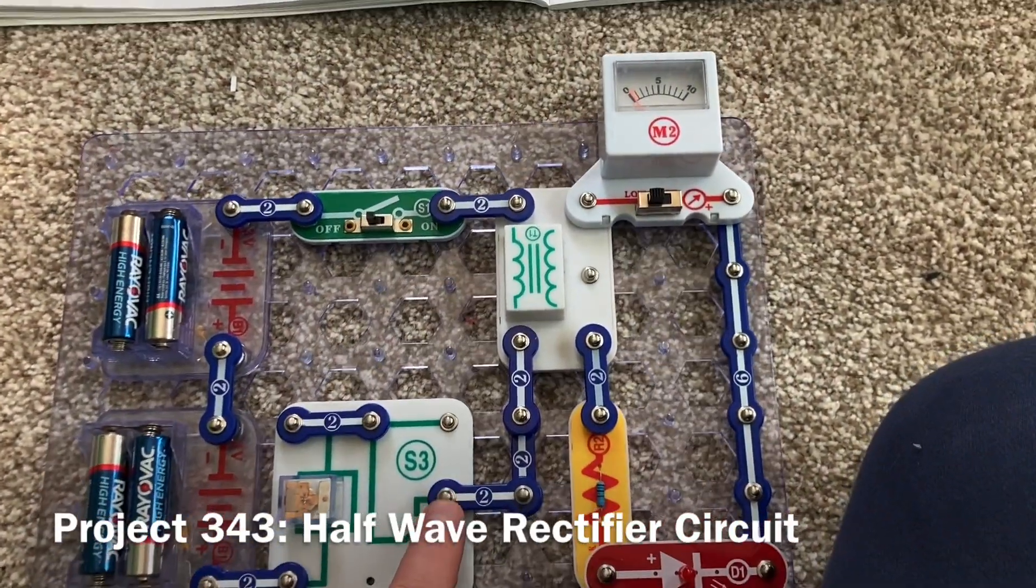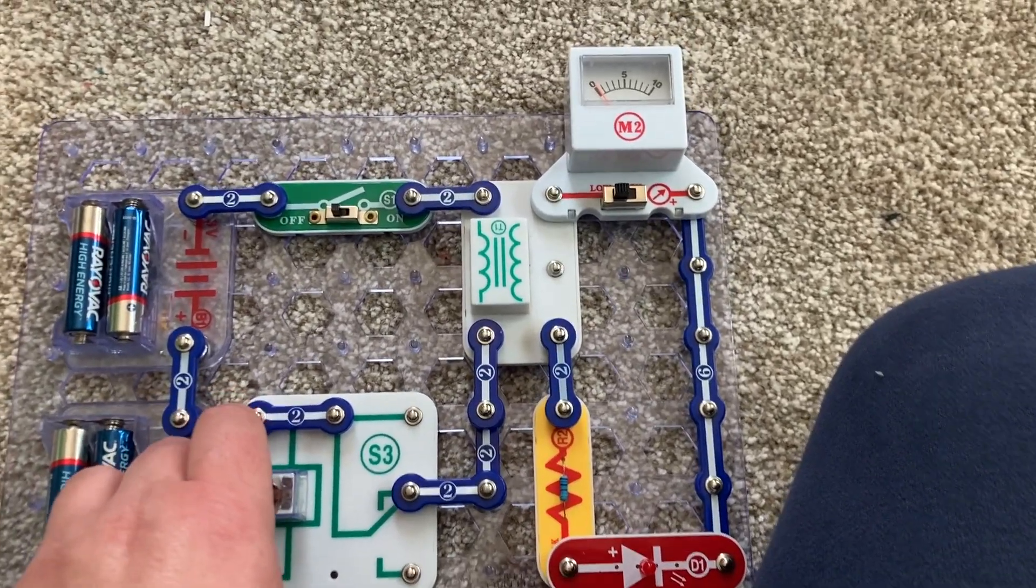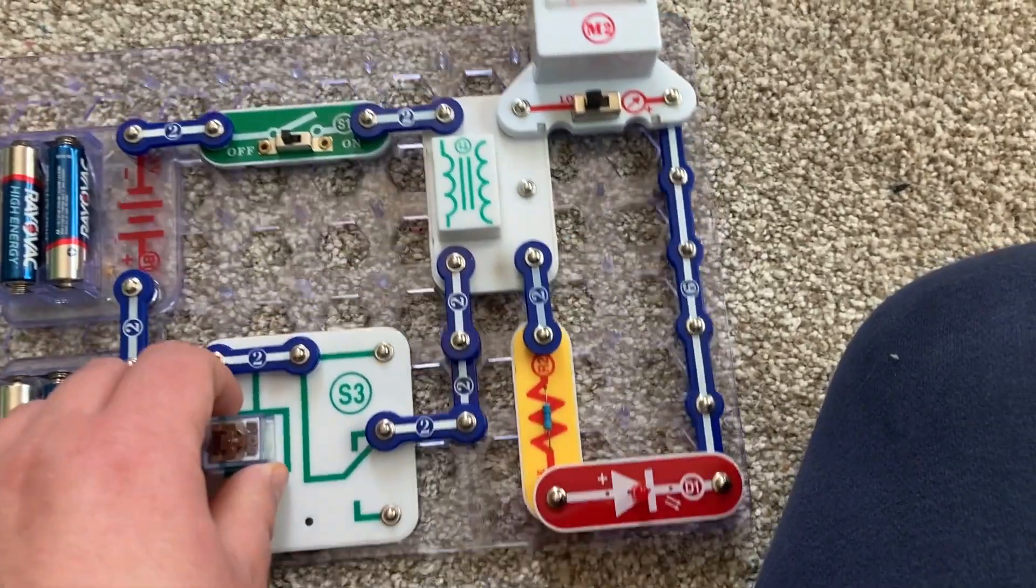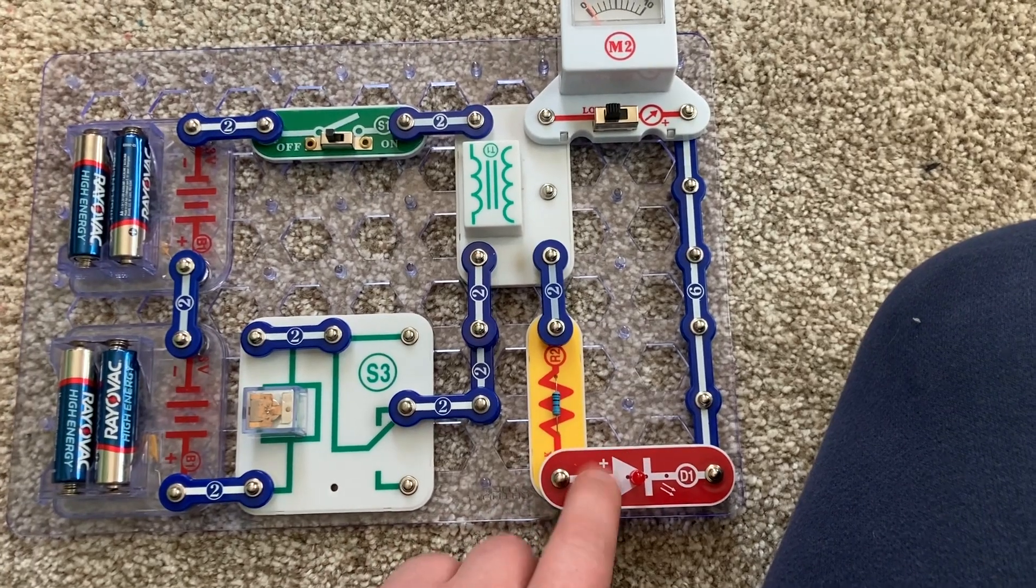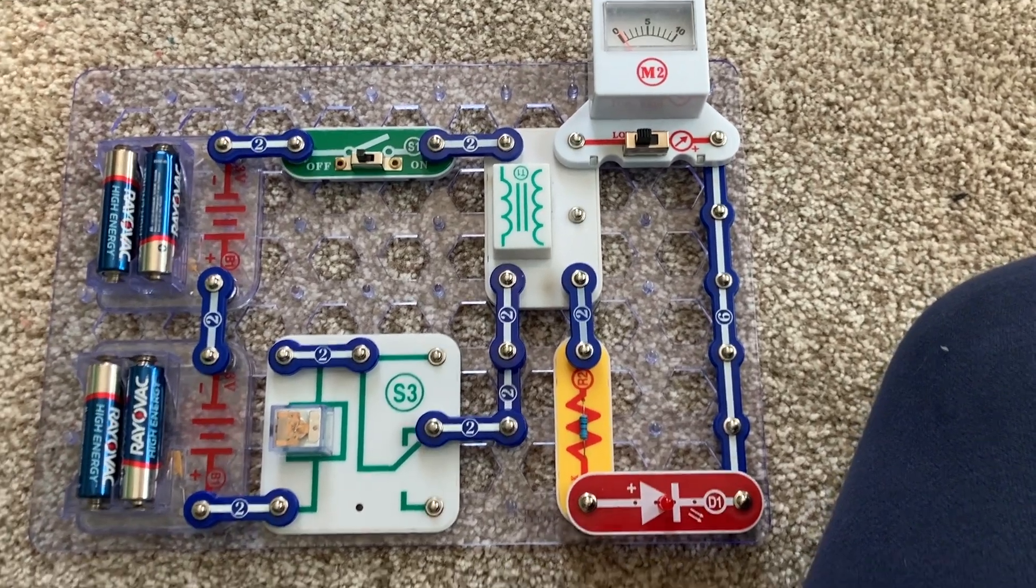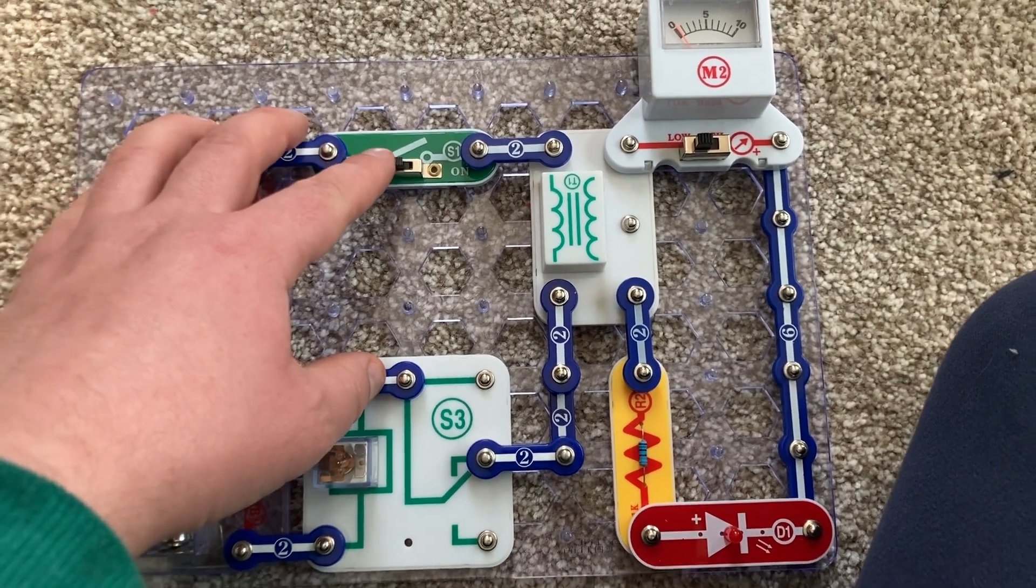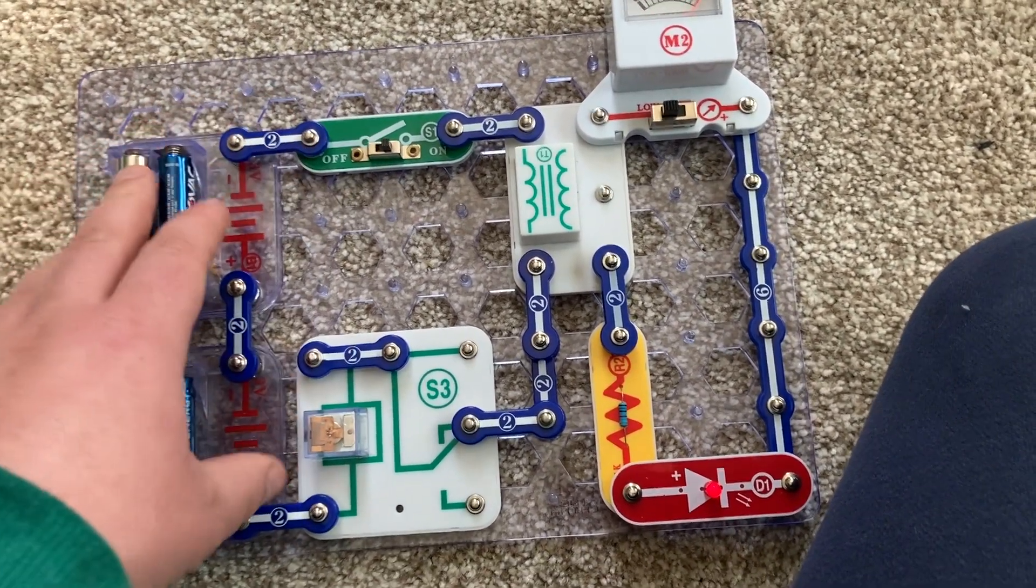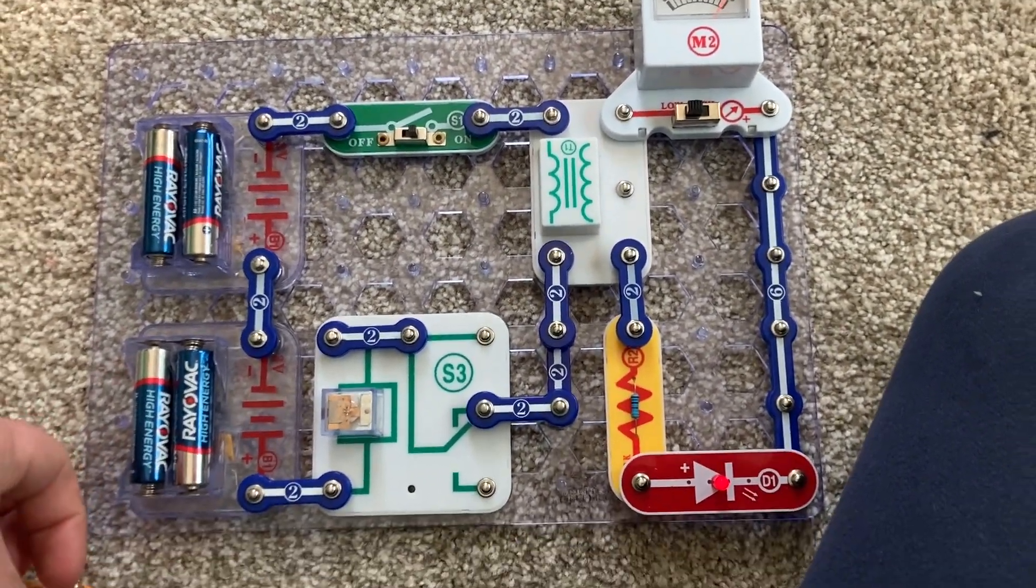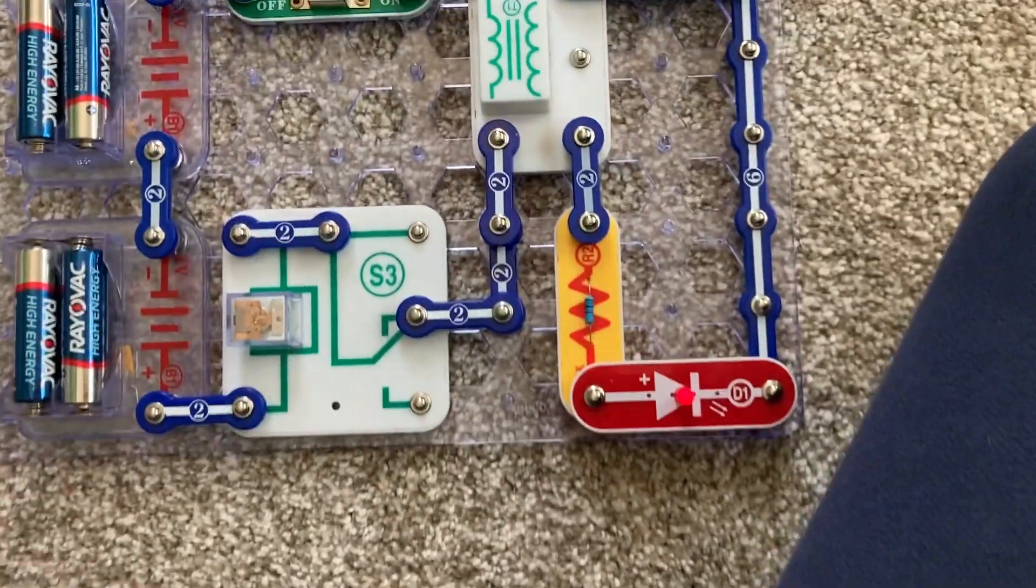This is the half-wave rectifier circuit. A rectifier converts an AC voltage into a DC voltage. AC stands for alternating current, and DC stands for direct current. In this project, a diode, which will now be the LED, is used since it allows current to flow in just one direction. When I turn on the slide switch, the contacts of the relay will open and close rapidly, generating AC current. But, the transformer will convert that current into voltage. It contains a rectifier, and look how far the voltage meter deflects. The red LED also lights.